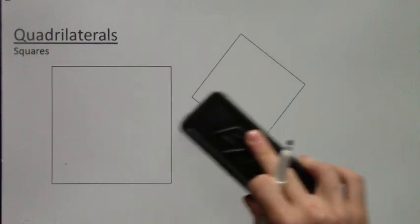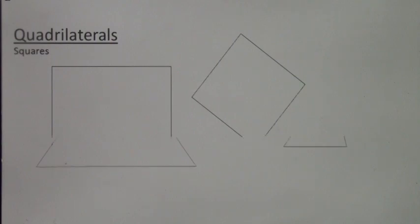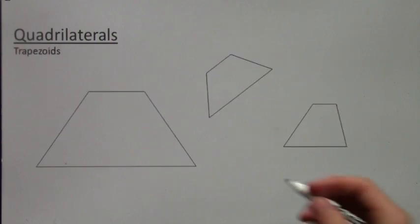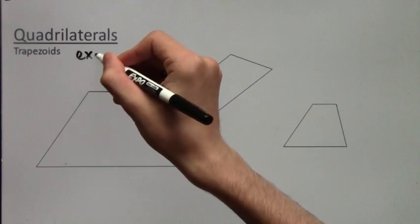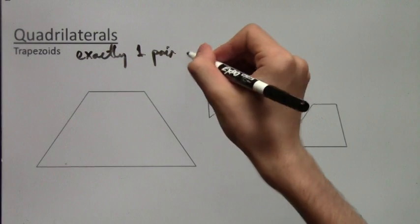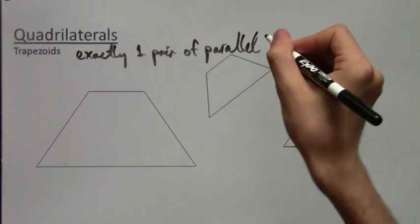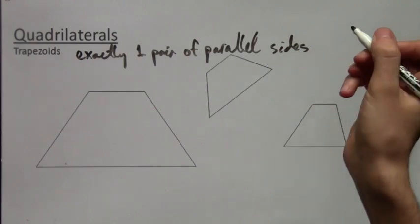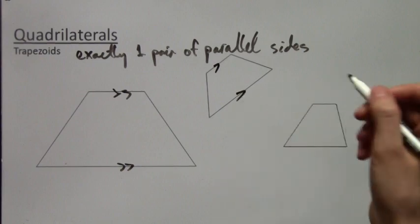Alright, what's next? Next up are trapezoids. Now these shapes look a little bit weird. So the special thing about trapezoids is that they have exactly one pair of parallel sides. So they can't be parallelograms. Parallelograms always have two pairs of parallel sides. But if there's only one pair of parallel sides, it's called the trapezoid.